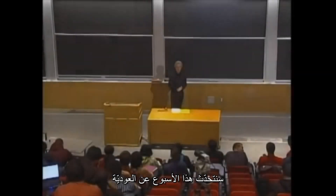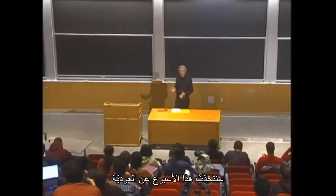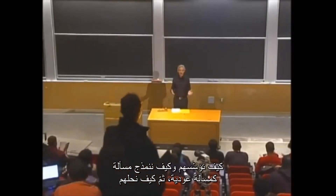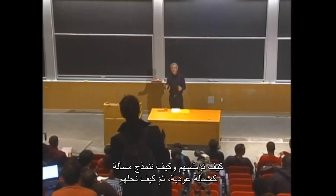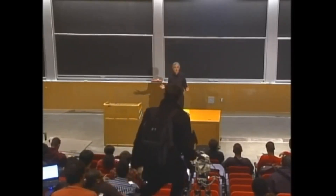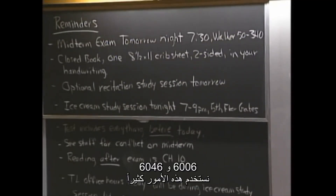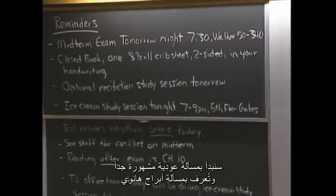This week we're going to talk about recurrences — how to set them up, how to model a problem as a recurrent problem, and then how to solve them. This stuff is really useful when you get into algorithm design and algorithm analysis. 6006 and 6046 will use this stuff a lot. We're going to start with a very famous recurrent problem known as the Towers of Hanoi problem.